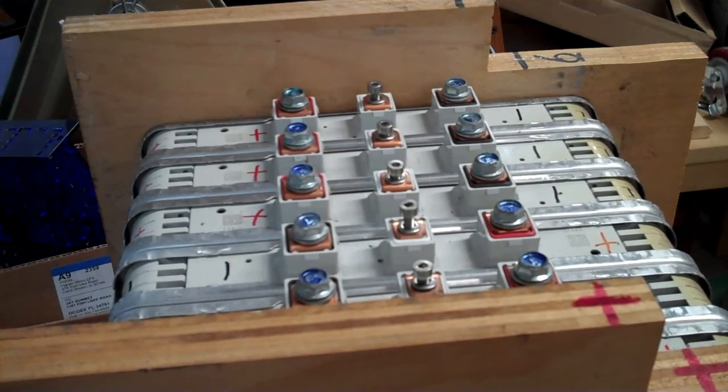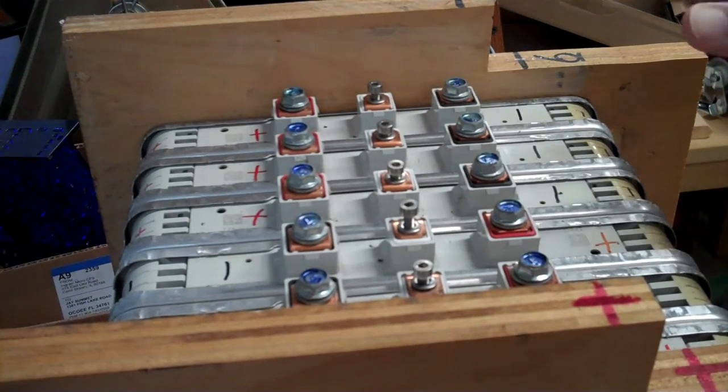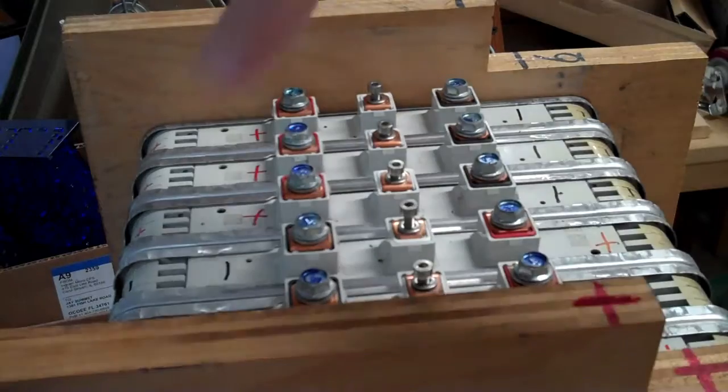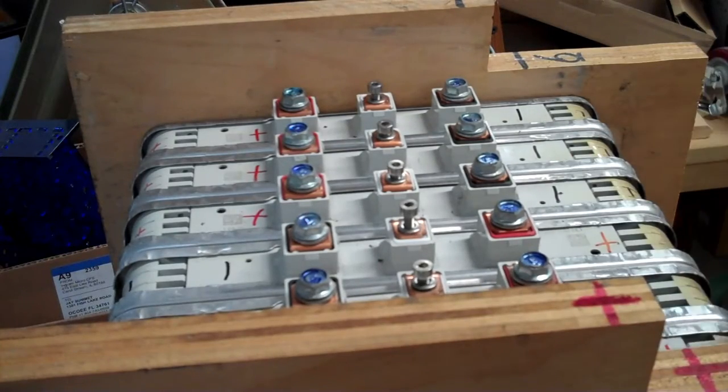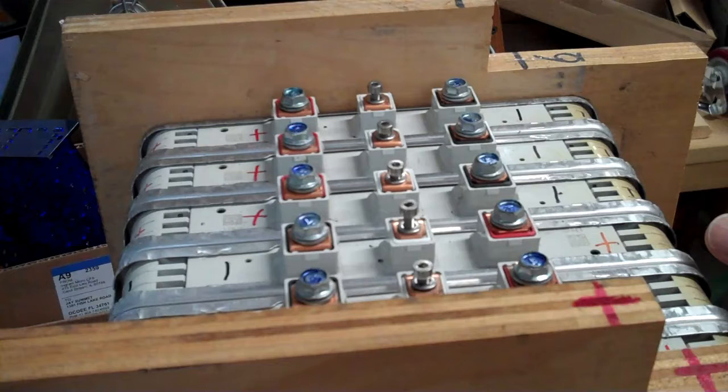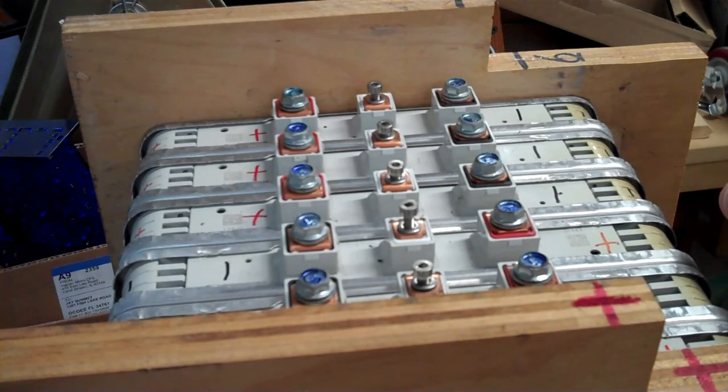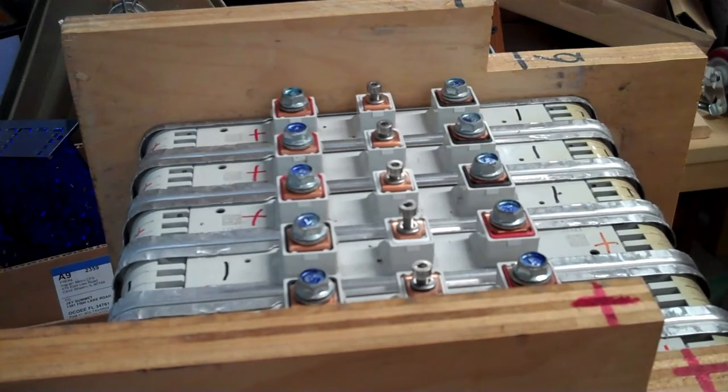This particular one, I had the battery management system, one of the cell monitors—there's four groups of cells in this module—one of the cell monitors had shorted or died shorted, and so it brought one set of these cells down to zero volts. I charged them back up, they mostly work, but they're not fully balanced.